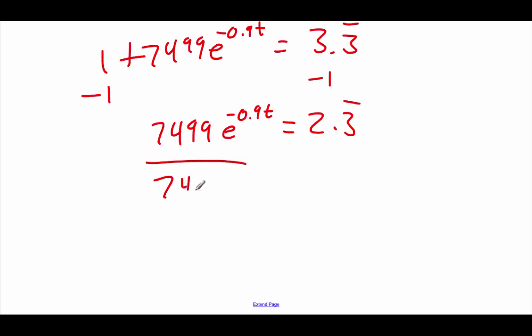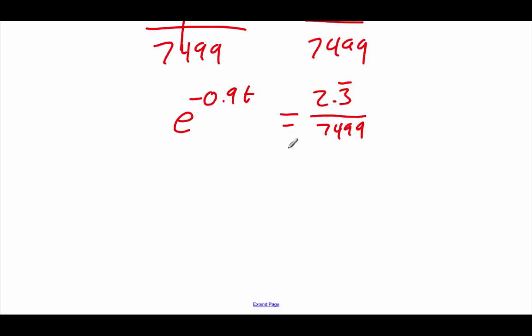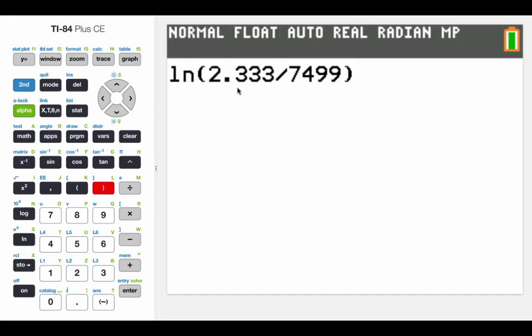Now I'm going to divide by that 7,499, but I'm not going to type this into my calculator just yet. So we've got e to the negative 0.9 t equals 2.3 repeating over 7,499. Now this is in exponential form right now. In order to solve it, I think it would be helpful to rewrite it in logarithmic form. So I'm going to go natural log of 2.3 repeating divided by that 7,499 equals negative 0.9 t. I think now would be the time where I would type this left-hand side into my calculator. You'll notice when I type this one in, I took the 2.3 repeating out to three decimals. If I hit enter, we get negative 8.075 and some other decimals.